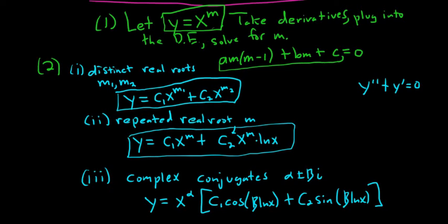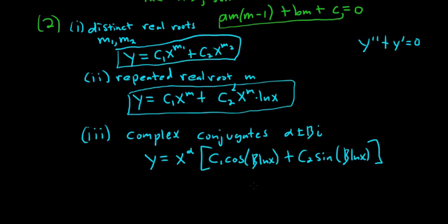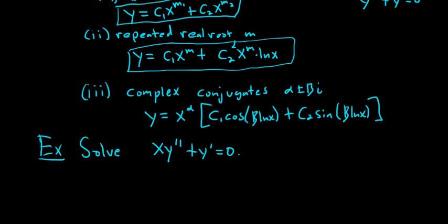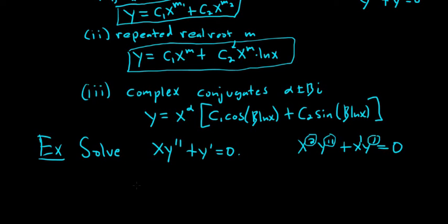Let's go ahead and do a simple example. Solve: x y double prime plus y prime equals 0. This is a Cauchy-Euler differential equation in disguise — if you multiply the whole thing by x, you get x squared y double prime plus x y prime equals 0. It is Cauchy-Euler because the power of x matches the order of the derivative.